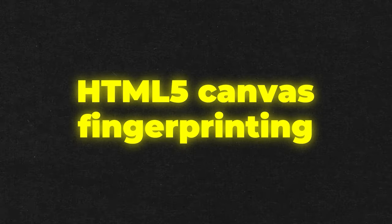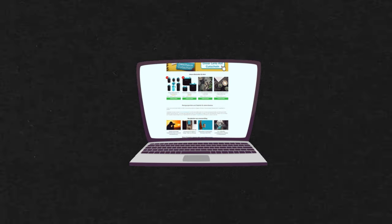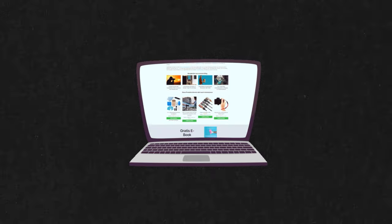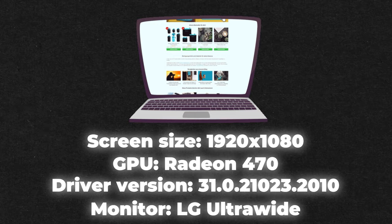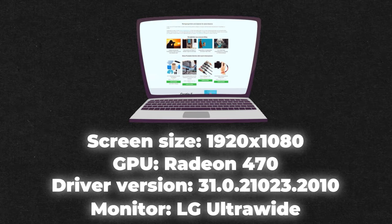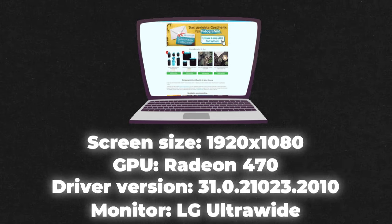Then we have HTML5 Canvas fingerprinting. This modern method uses the HTML5 Canvas element to render an image based on your device's data, such as screen size and installed fonts. It's like an artist creating a portrait based on the unique characteristics of your device.